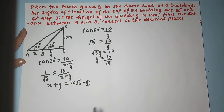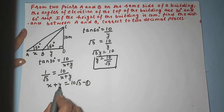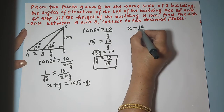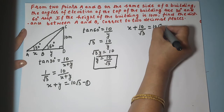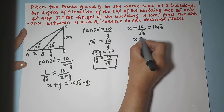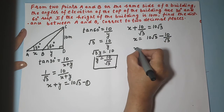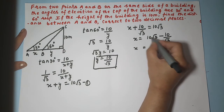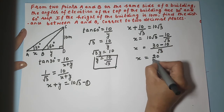I will substitute Y equals 10 upon root 3 into equation one to get the value of X. So X plus 10 upon root 3 equals 10 root 3. Shifting the Y term to the right side gives X equals 10 root 3 minus 10 upon root 3. Taking root 3 as LCM: root 3 times root 3 is 3, so 3 times 10 is 30, minus 10 gives X equals 20 upon root 3.